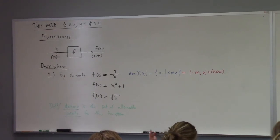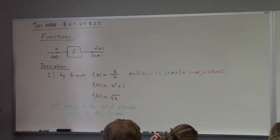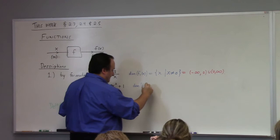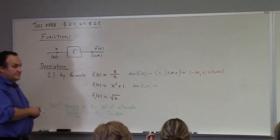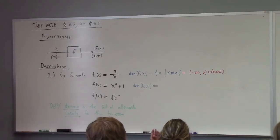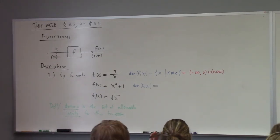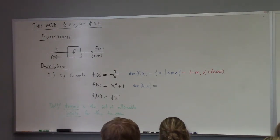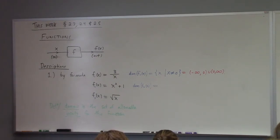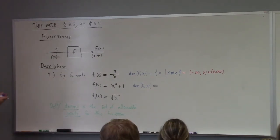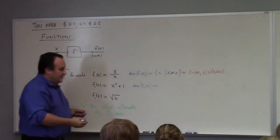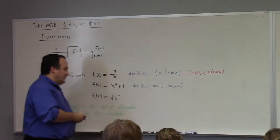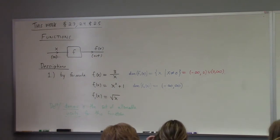How about the domain of f2, which is x squared plus 1? F2 is a polynomial — a quadratic polynomial. The domain of any polynomial is just the whole real line, because you can add, subtract, and raise things to powers regardless of whether they're positive, negative, or zero. The formula makes sense independent of what x is, so the domain is all real numbers: negative infinity to infinity.